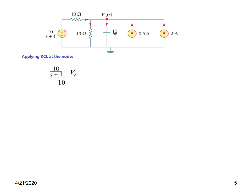The voltage source minus the node voltage divided by the resistance gives the current in that path: [10/(s+1) - v_naught] / 10. Adding the two current sources: plus 2, plus 0.5. For leaving currents: v_naught / 10, plus v_naught / (10/s) — that is, v_naught · s/10. This is the complete KCL equation.